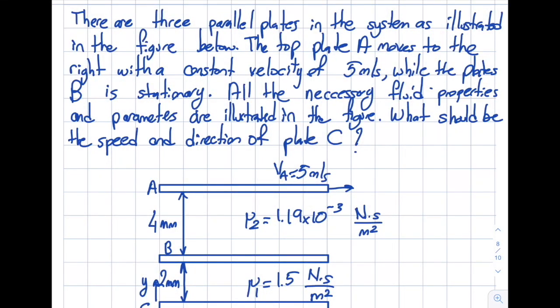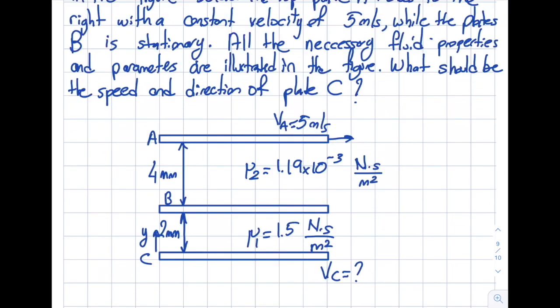Okay, let's solve this problem. There are three parallel plates in the system as illustrated in the figure below. The top plate is moving to the right with a constant velocity of 5 meter per second, while plate B is stationary. All the necessary fluid properties and parameters are illustrated in the figure. What should be the speed and direction of plate C?